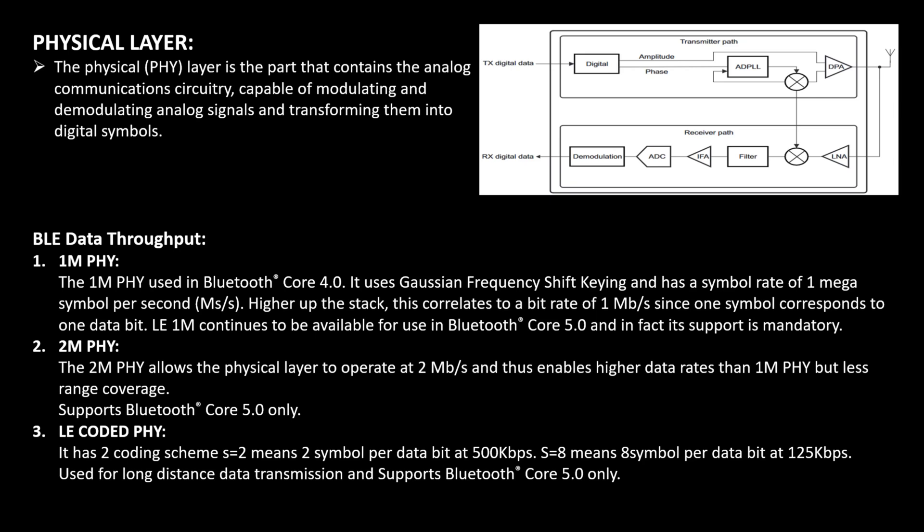2M PHY allows the physical layer to operate at 2 Mbps, enabling a high data rate but less range coverage. This configuration is supported in Bluetooth 5.0 only. The third configuration is LE Coded PHY, which has two schemes: with S=2, data is transmitted at 500 kbps (half of 1M PHY), and with S=8, at 125 kbps (1 Mbps divided by 8). LE Coded PHY is used for long-range data transmission and is supported only in Bluetooth 5.0.